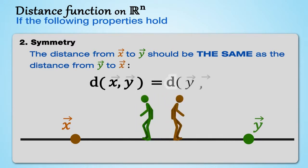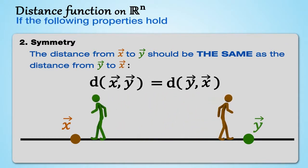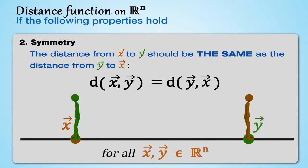The distance from x to y should be the same as the distance from y to x. d(x,y) equals d(y,x) for all x, y in ℝⁿ.